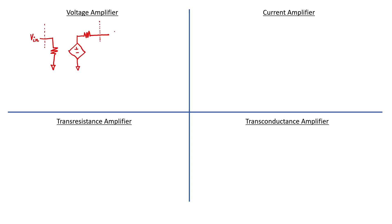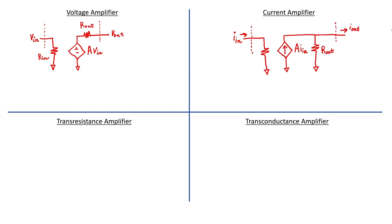A voltage amplifier has an input voltage and an output voltage. The gain, A, is dimensionless. The input and output impedances are arranged as shown. A current amplifier has input current and output current. The gain of a current amplifier, A, is also dimensionless. The input and output impedances are arranged as shown.